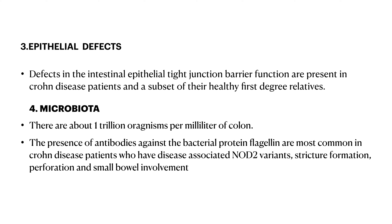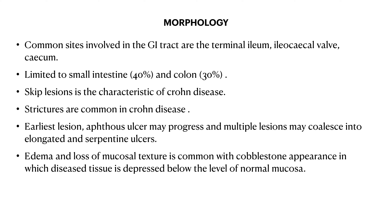Antibodies to flagellin protein are absent or very uncommon in ulcerative colitis. One model puts all these factors together, suggesting a cycle in which transepithelial flux of luminal bacterial components activates innate and adaptive immune responses in a genetically susceptible host. The subsequent release of TNF and other immune-mediated signals directs the epithelium to increase tight junction permeability, causing further increase in flux of luminal material, establishing a self-amplifying cycle leading to maladaptive immune response.